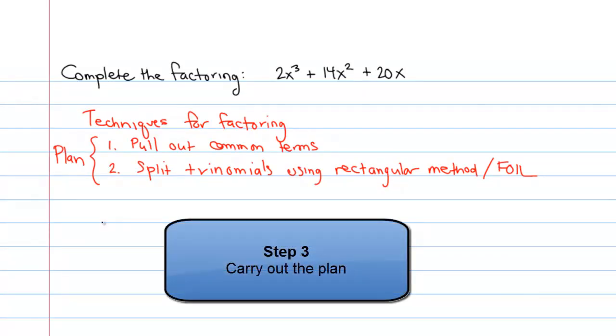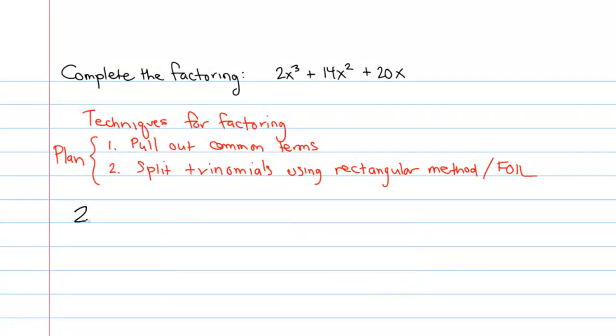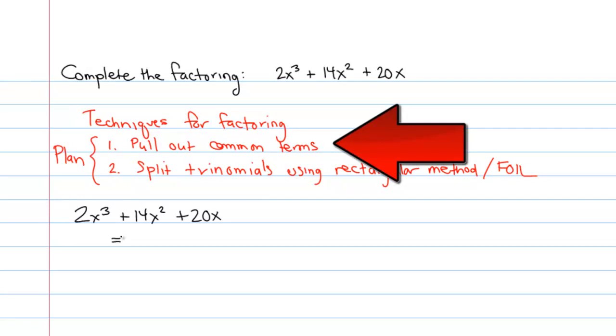So now that we have a plan, we can move on to step 3, putting that plan into action. So we have our original polynomial, 2x cubed plus 14x squared plus 20x. The first thing I'm going to attempt to do is to factor out any terms who are common to all of the pieces.